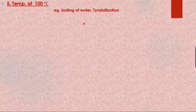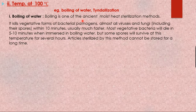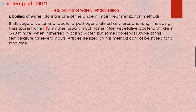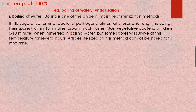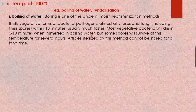At temperature at 100°C, examples are boiling of water and tyndallization. Boiling of water is the most ancient method used for water sterilization. It kills vegetative forms of all bacterial pathogens, almost all viruses, and fungi including their spores within 10 minutes — usually much faster. Most vegetative bacteria die within 5 to 10 minutes in boiling water, but some spores will survive at this temperature for several hours.